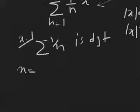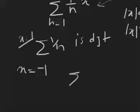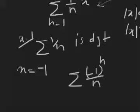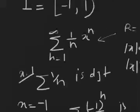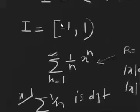If you plug x equals negative 1 into the power series, you get an alternating series, which is convergent. So the interval of convergence of this power series is [-1, 1) — including negative 1 and excluding positive 1. For this interval of convergence, this is the corresponding power series. You can change the radius by changing the denominator: replace 1 with 10 to get the interval [-10, 10).